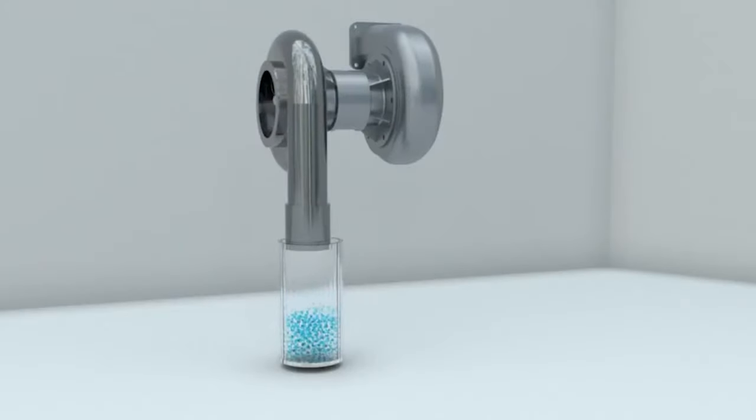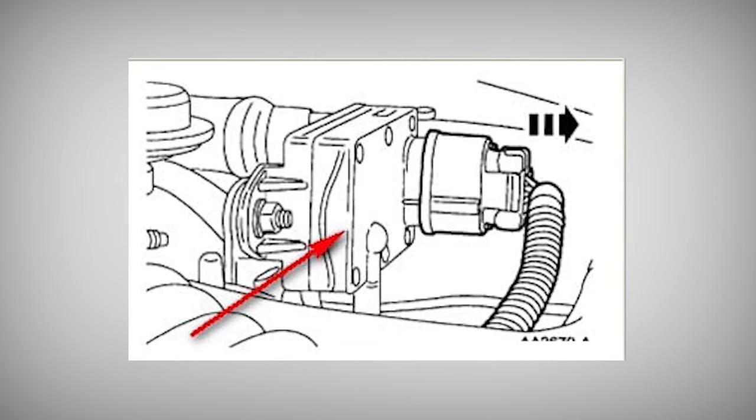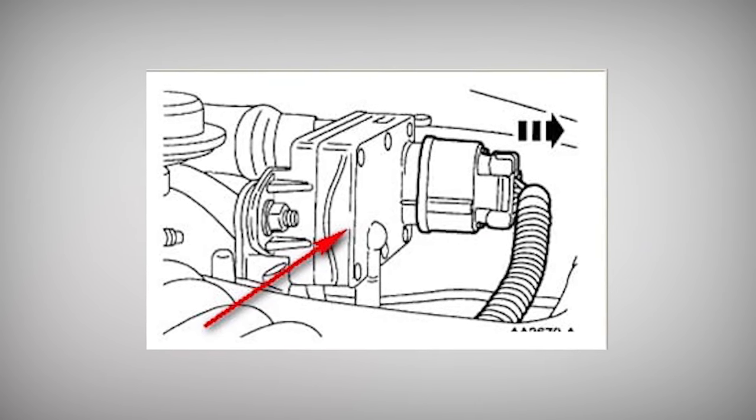Vacuum-operated EGR valves have a solenoid that regulates how much suction is given to the diaphragm, allowing the valve to open and close.